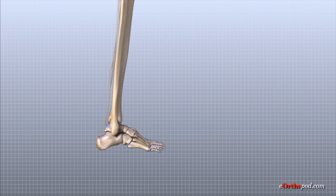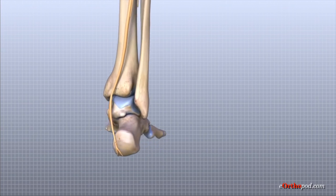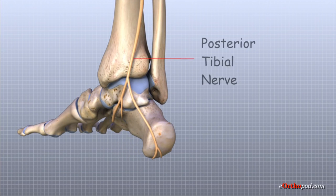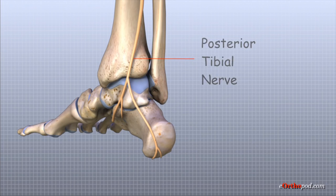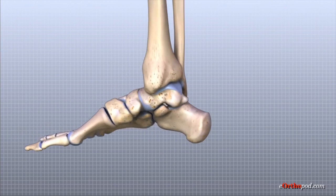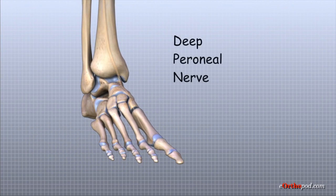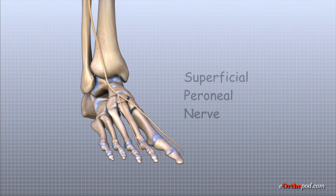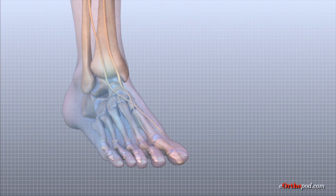The nerve supply of the ankle is from nerves that pass by the ankle on their way into the foot. The large posterior tibial nerve runs behind the medial malleolus and into the foot to control the muscles in the sole of the foot. The deep peroneal nerve crosses in front of the ankle on its way to the top of the foot. Multiple branches of the superficial peroneal nerve cross along the outer edge of the ankle, controlling muscles in this area and giving sensation to the top and outside edge of the foot.